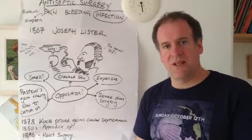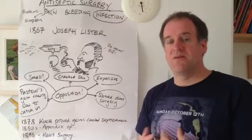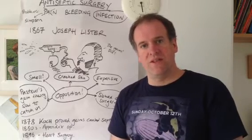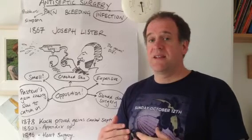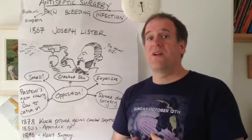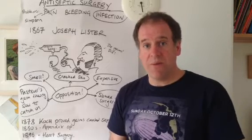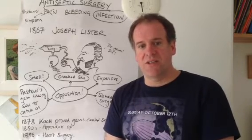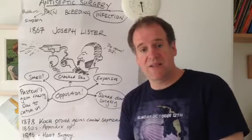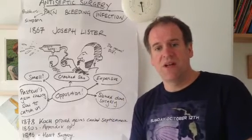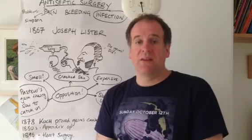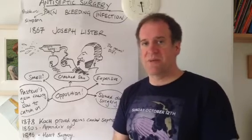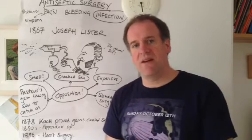Koch proved it was causing the blood poisoning, and this research greatly helped Joseph Lister's cause. As were some incredibly successful antiseptic surgeries happening, such as the first appendix being removed, and also being able to operate on the heart — one man was stabbed in the heart and they were able to operate and save his life.